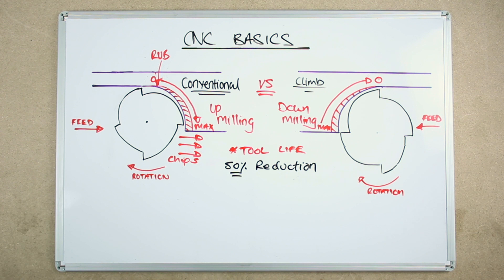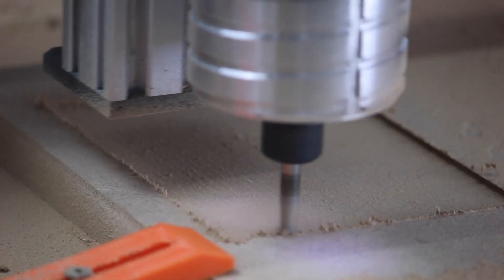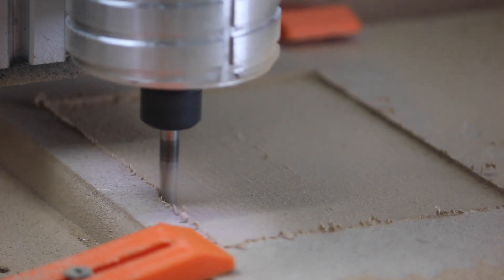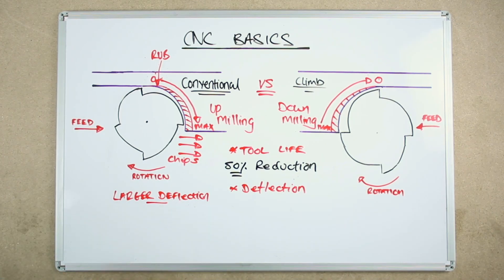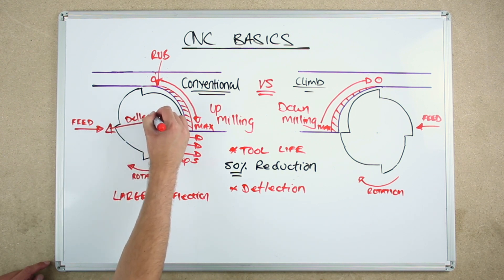How do the two directions affect end mill deflection? Conventional and climb milling have different effects on end mill deflection. Conventional milling puts greater force on the end mill, so therefore a larger deflection. But because of the way the chips are cut, the deflection tends to be parallel to the direction of the cut, so it has minimal effect on part geometry and will provide a smoother wall finish.